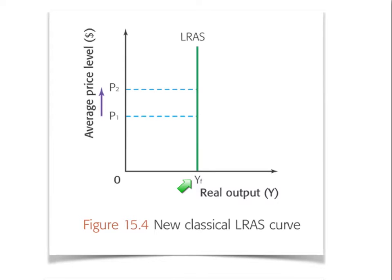It's important to realize that full employment does not mean there is zero unemployment — think of it as more or less a 5% rate of unemployment in an economy. The long-run aggregate supply curve in the neoclassical view asserts that the potential output is based entirely on the quantity and quality of the factors of production and not on the price. This line represents the maximum potential — or rather, the potential output — of the economy.